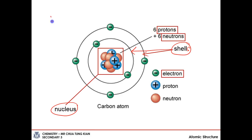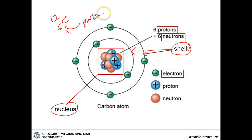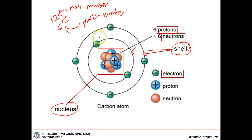From the periodic table, you would have seen carbon represented as C-12-6. This 6 represents the proton number, i.e., the number of protons. And the number on top, 12, represents the mass number, i.e., the number of protons plus the number of neutrons. The shells contain electrons — there are two electrons in the first shell and four electrons in the second shell.